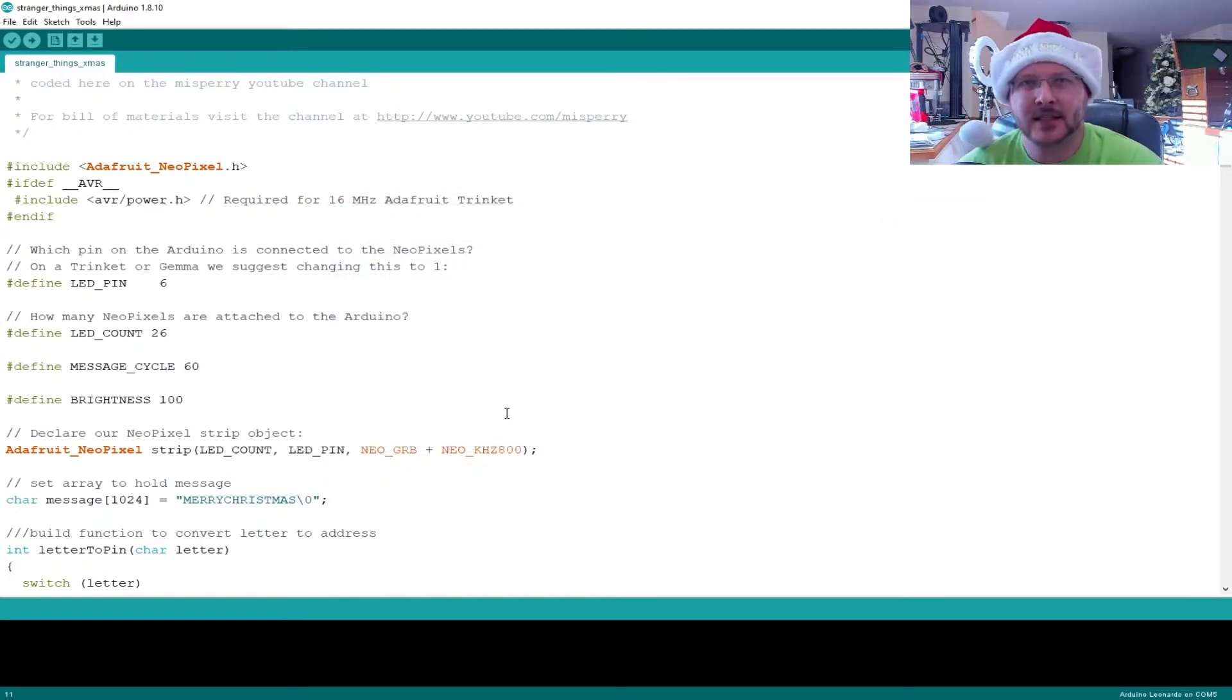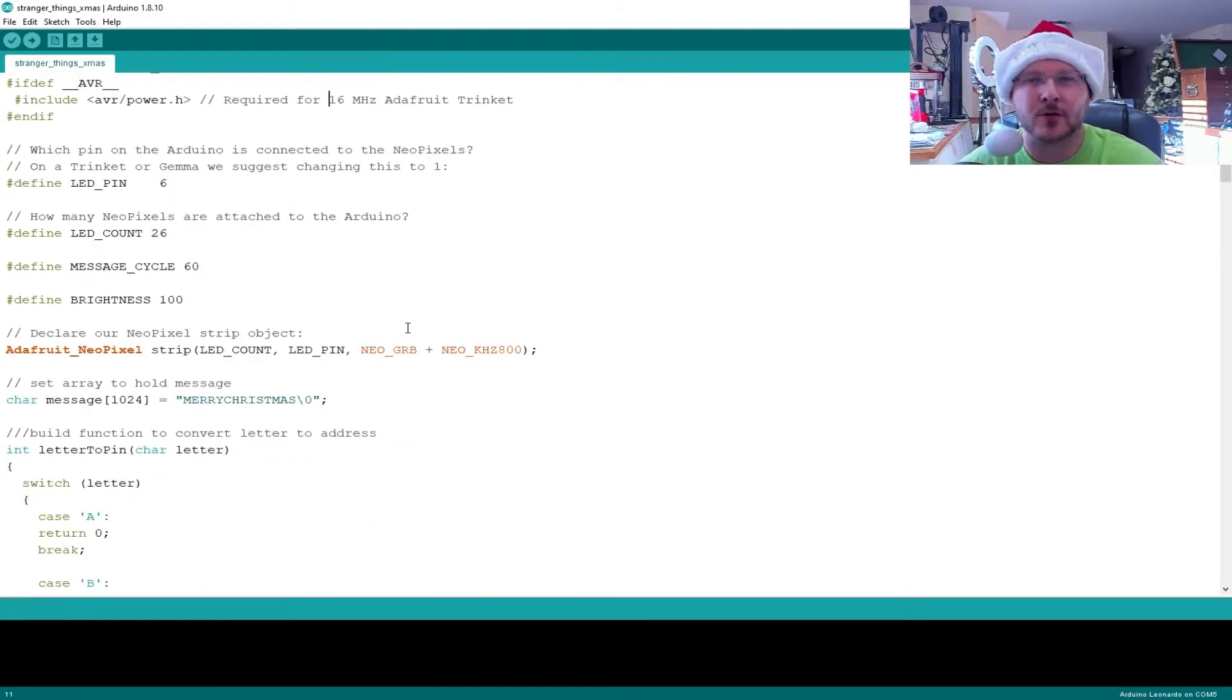Once you have that, you should be able to put this together. All you have to do to configure this software is to set up pin six, and you have to set up LED count 26, and you have to set up your message cycle, which I've got it on every 60 seconds. It'll cycle the message, and then I've got brightness set to 100.